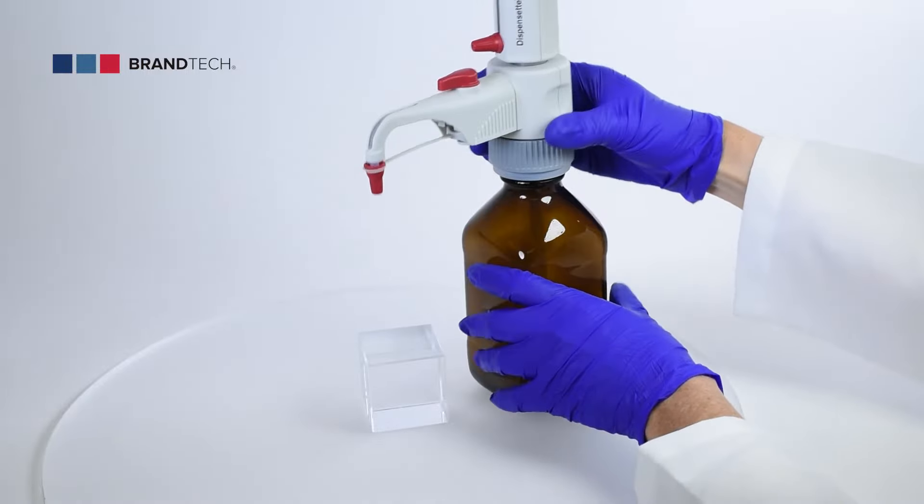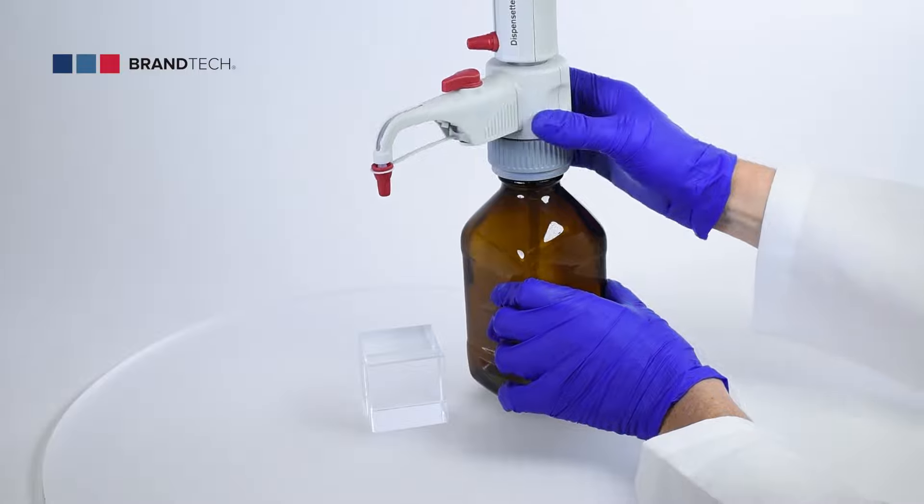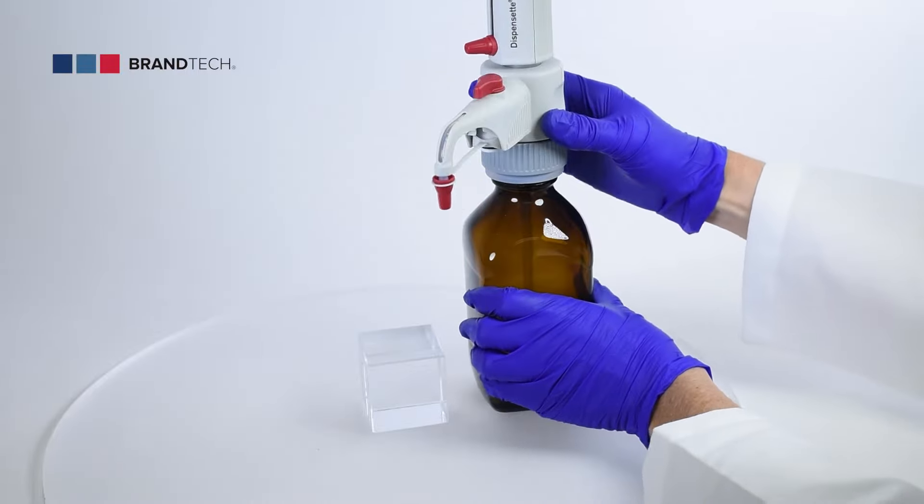The Dispenset S has a rotating valve block which allows you to position the dispenser with the bottle label facing you at all times.